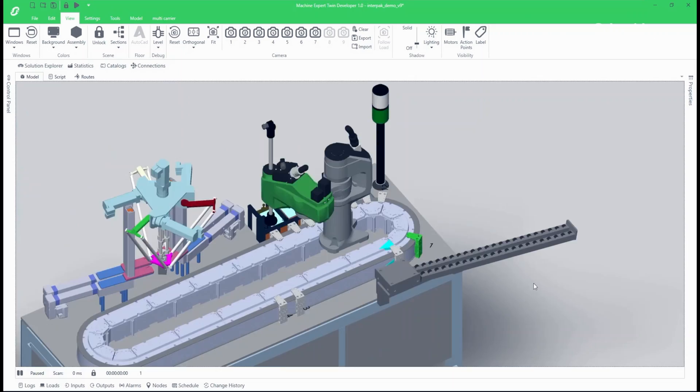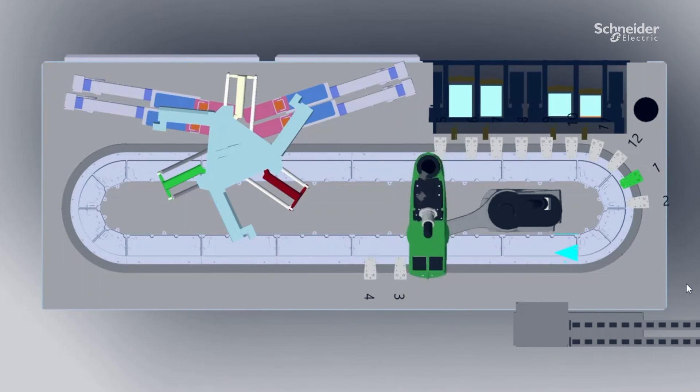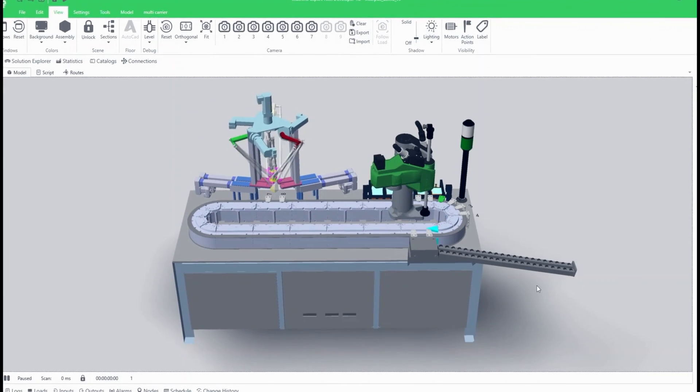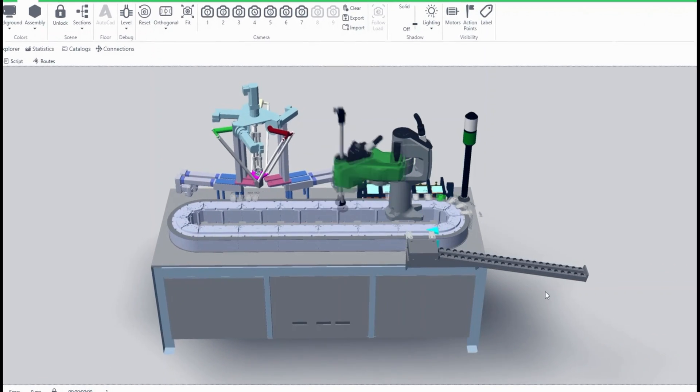EcoStruxure Machine Expert Twin is a scalable software suite that creates digital models of real machines, so design, engineering and commissioning can be done virtually before building the machine.